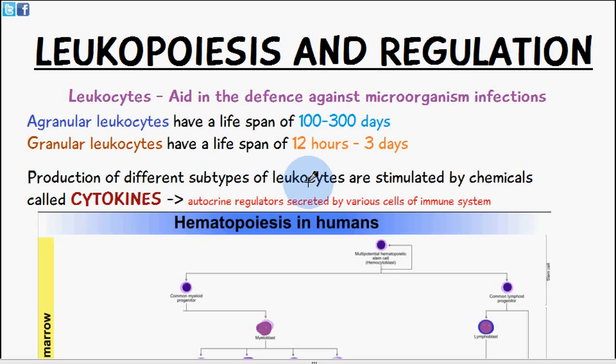We have two types of leukocytes or white blood cells. They are agranular leukocytes, which have a lifespan of 100 to 300 days, and granular leukocytes, which have a lifespan between 12 hours to three days. There are different subtypes of both agranular and granular leukocytes, and we're going to be making a separate video which focuses just on those subtypes and their functions.